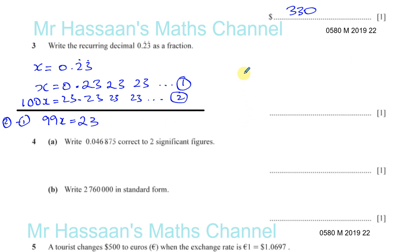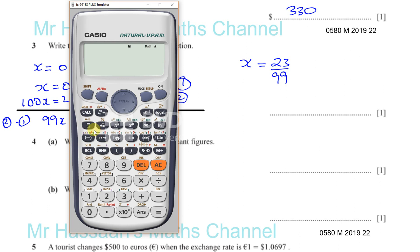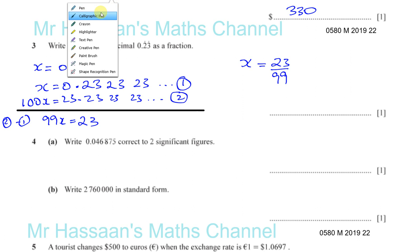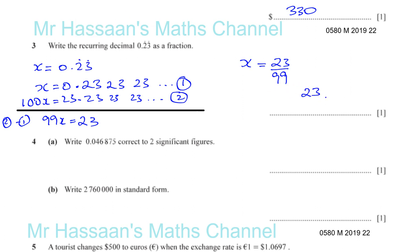So x equals 23 over 99. If you want to be sure of your answer, you can check: put 23 over 99 in your calculator, press S to D, and you see you get 0.232323... Of course you can't use your calculator to answer the question, but you can check your answer to verify it's correct.